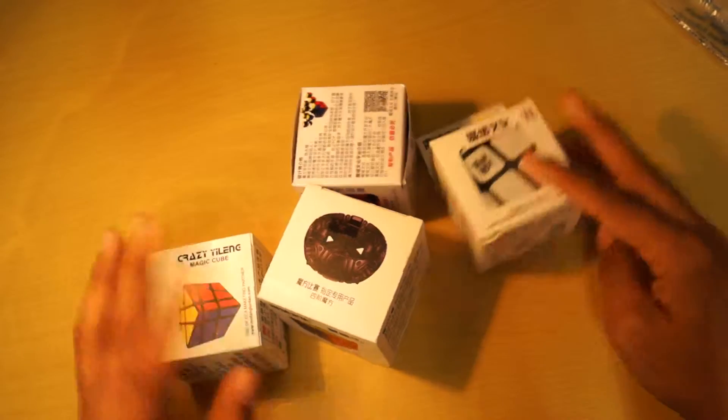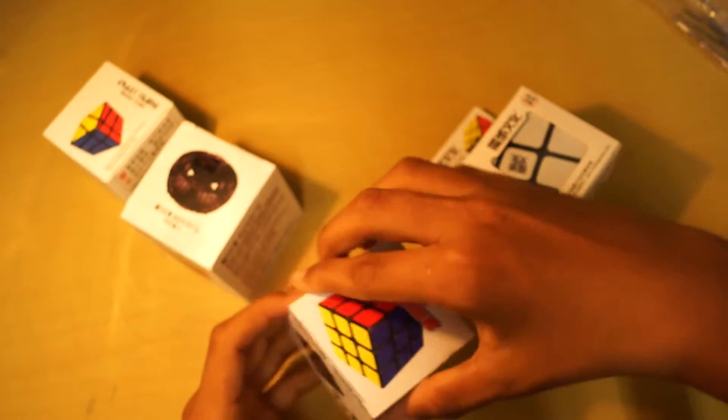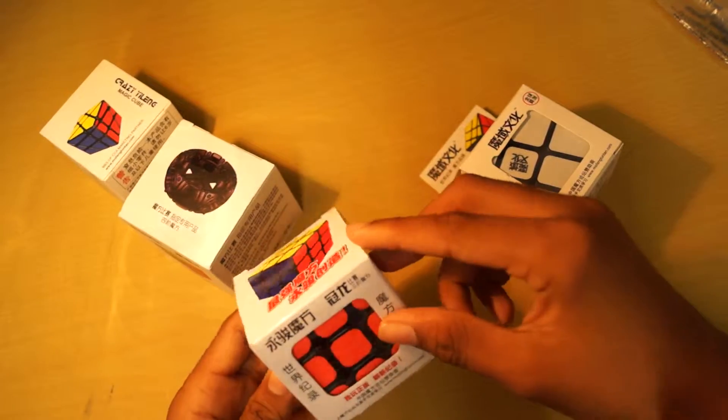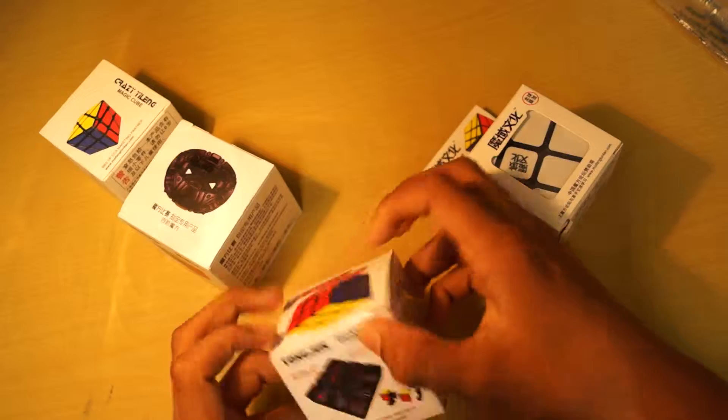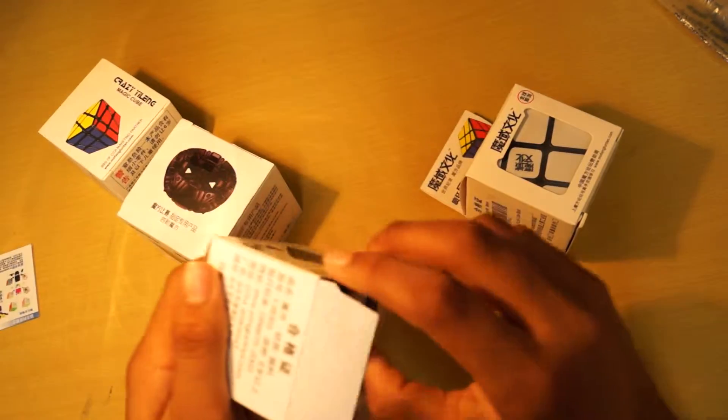Let's start off with the YJ Sulong. Yep, so it's a typical... Oh! It's a Guanlong. Sorry. Anyways, it's a very cheap cube, so I'm not expecting much out of it.